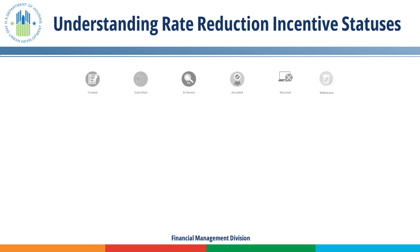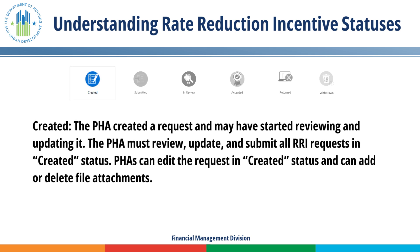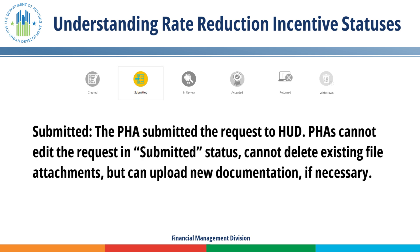The portal tracks six different Rate Reduction Incentive request statuses. Created: The PHA created a request and may have started reviewing and updating it. The PHA must review, update, and submit all Rate Reduction Incentive requests in created status. PHAs can edit the request in created status and can add or delete file attachments. Submitted: The PHA submitted the request to HUD. PHAs cannot edit the request in submitted status, cannot delete existing file attachments, but can upload new documentation if necessary.